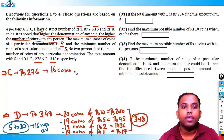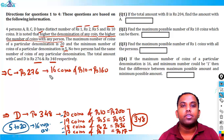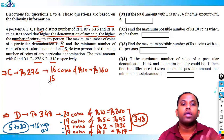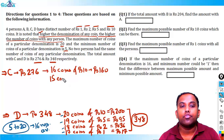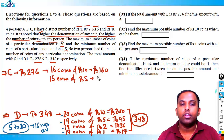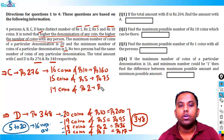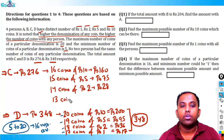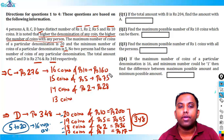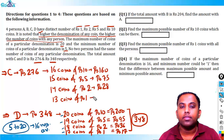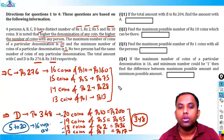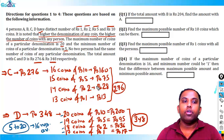C has 16 coins of rupees 10 (rupees 160). Next: 15 coins of rupees 5 (rupees 75), then 14 coins of rupees 2 (rupees 28), and 13 coins of rupees 1 (rupees 13). Sum: 160 + 75 = 235 + 28 = 263 + 13 = 276. We've found C's allocation: {16, 15, 14, 13}. The groundwork for C and D is done.